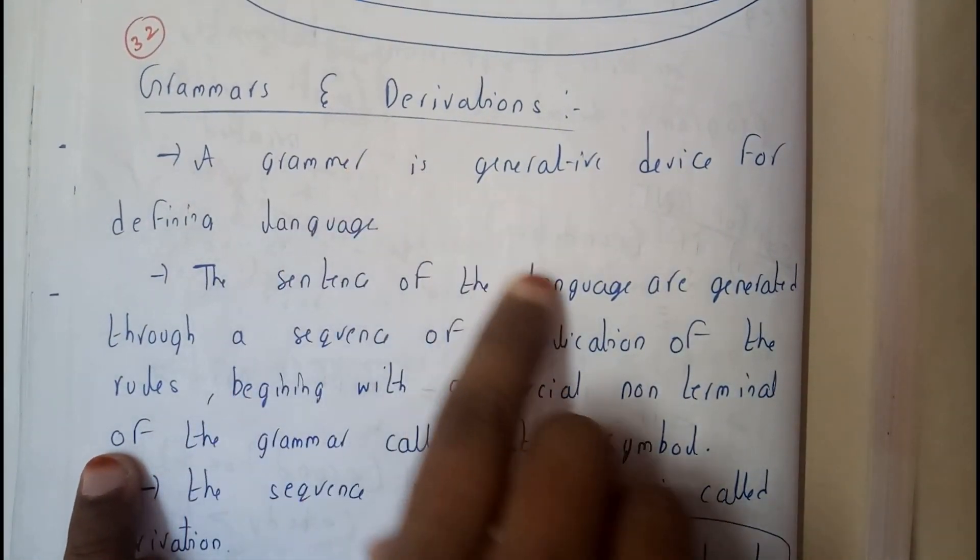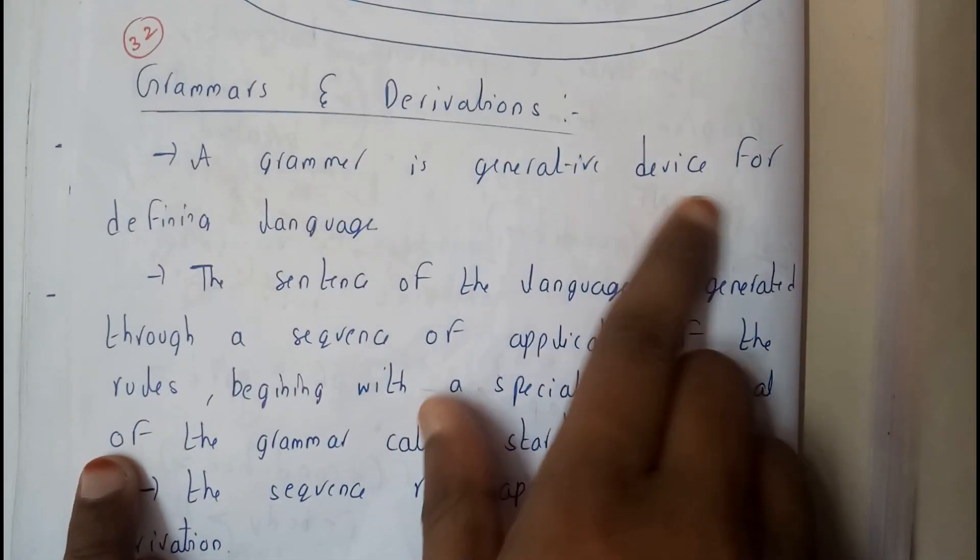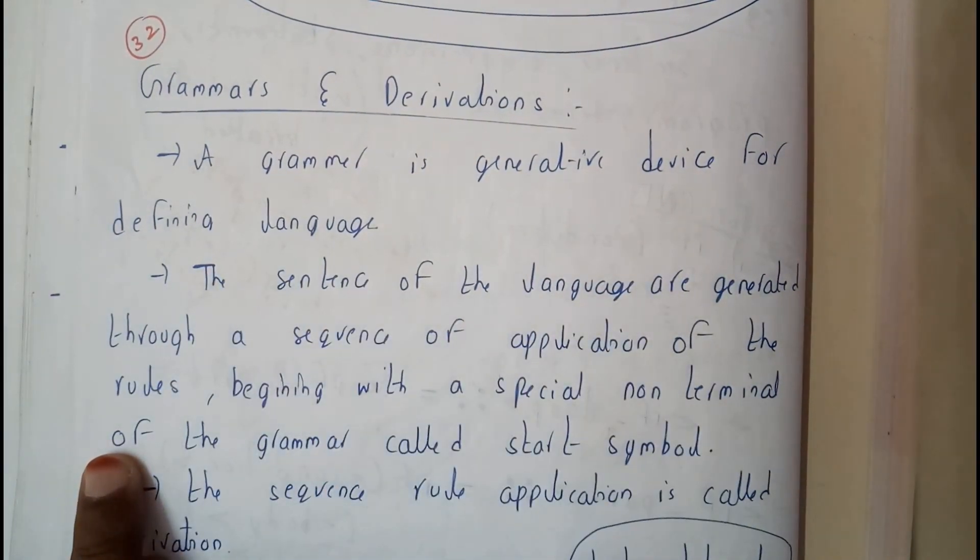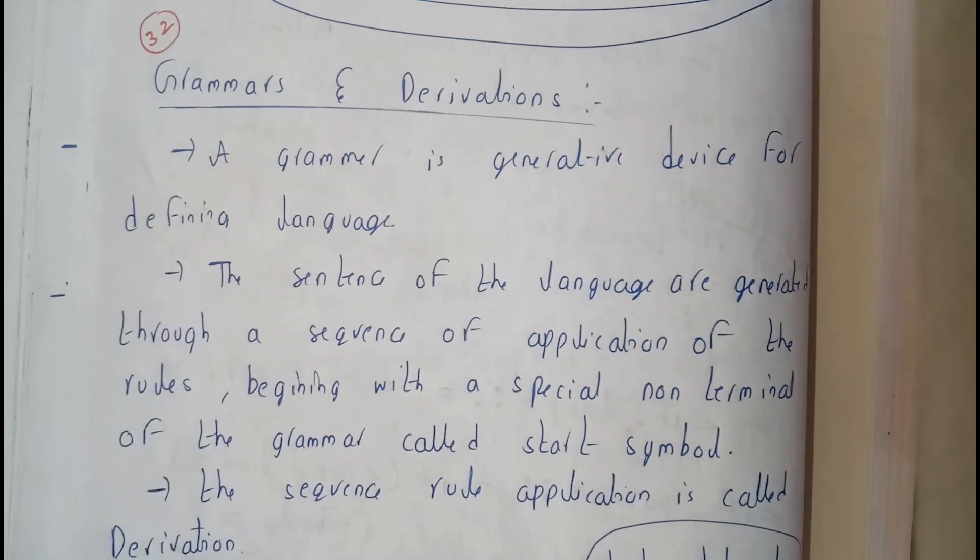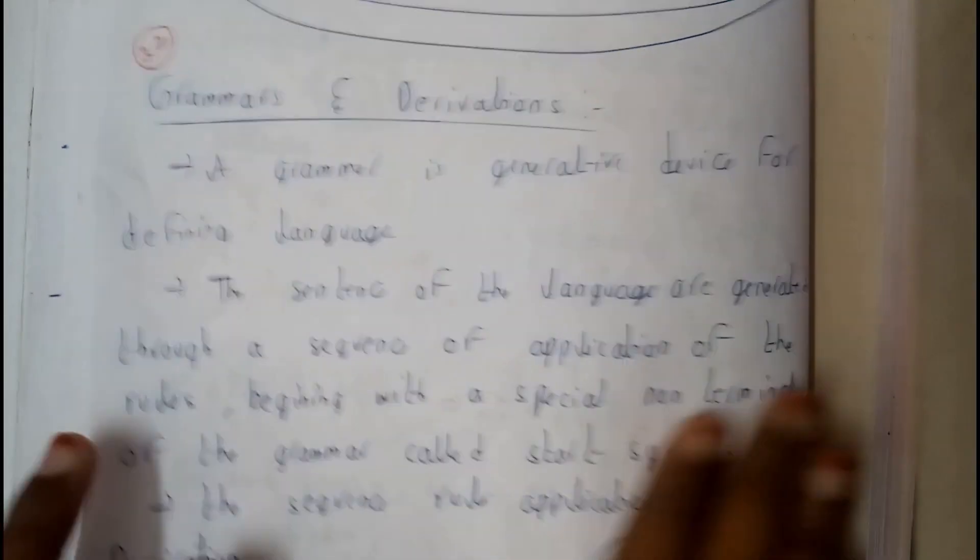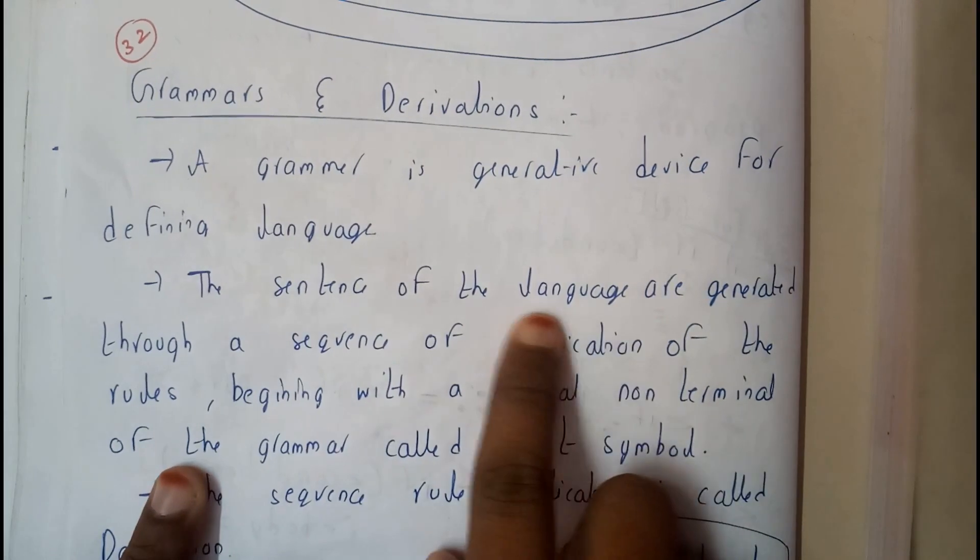A grammar is a generative device for defining a language. It gives meaning to a sentence and everything - it is the main part of a programming language.